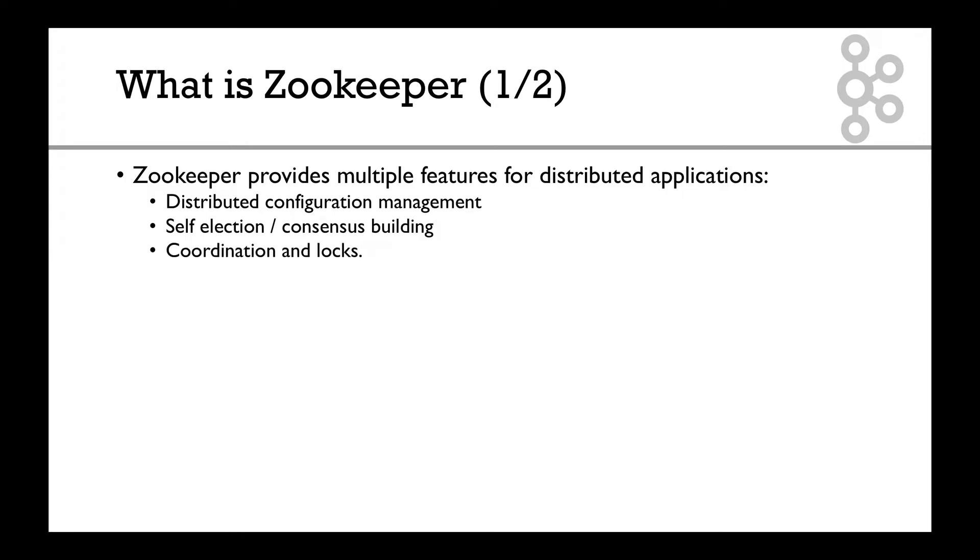It also does coordination in locks. That's more low level but it's good to know. And finally, in Kafka's case, it does key value store so it can store many configurations for topics, for brokers, etc. We're going to see this when we do a deep dive.